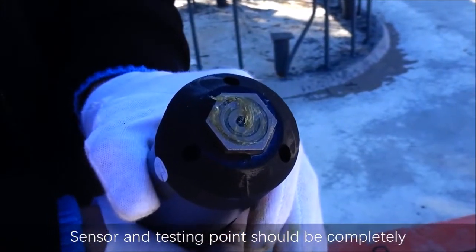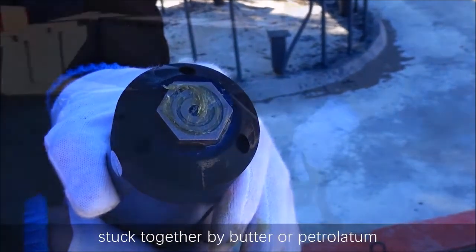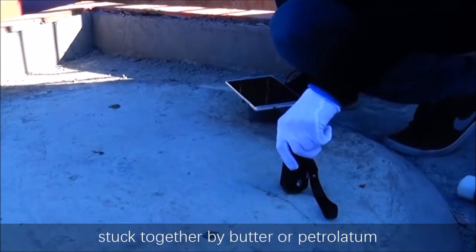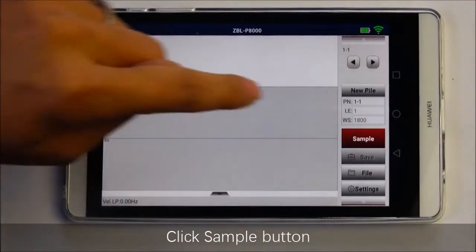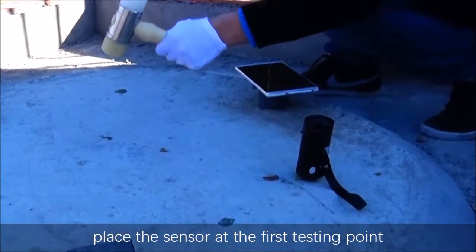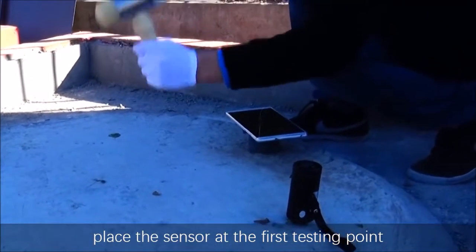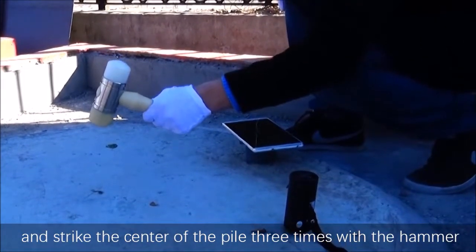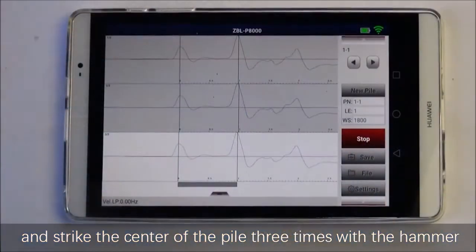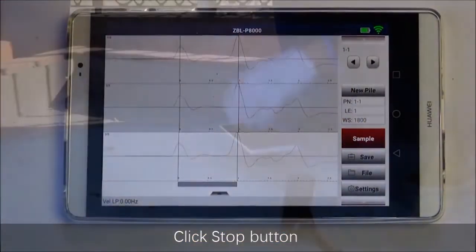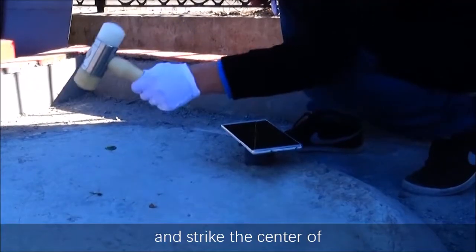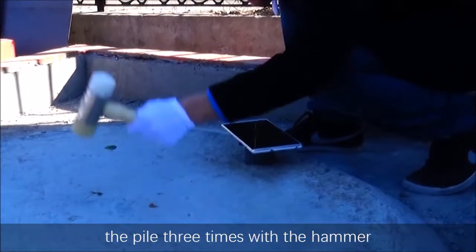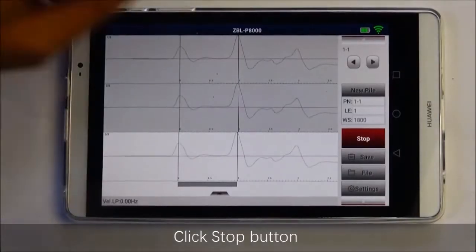The sensor and the testing point should be completely stuck together by putty or petroleum jelly and ensure the sensor is vertical to the top of the pile. Click the sample button. Place the sensor at the first testing point and strike the center of the pile three times with the hammer. Click the stop button. Then place the sensor at the second testing point and strike the center of the pile three times with the hammer. Click the stop button.